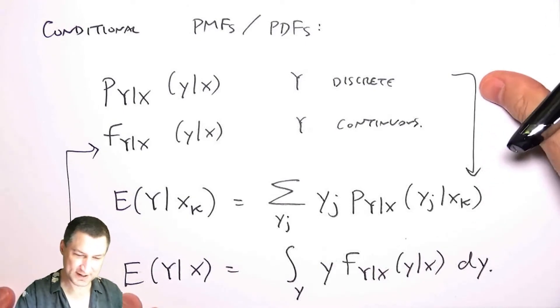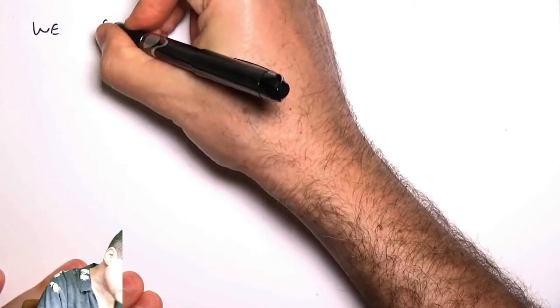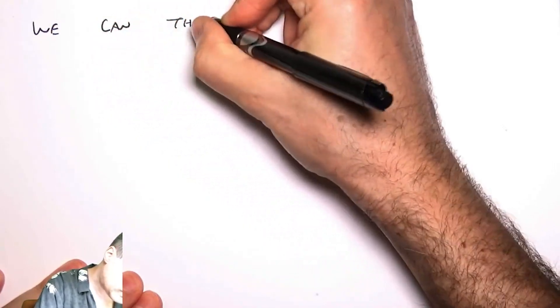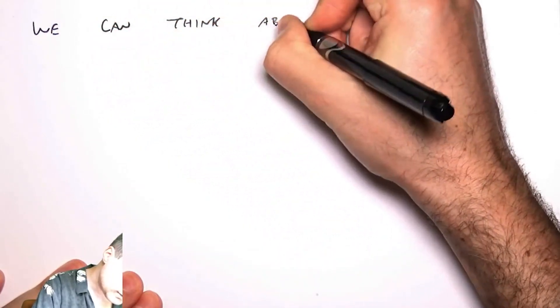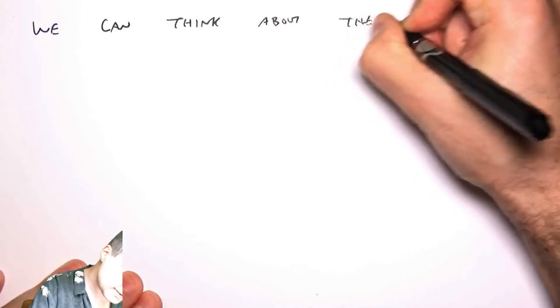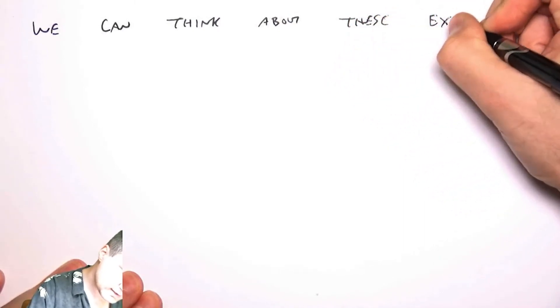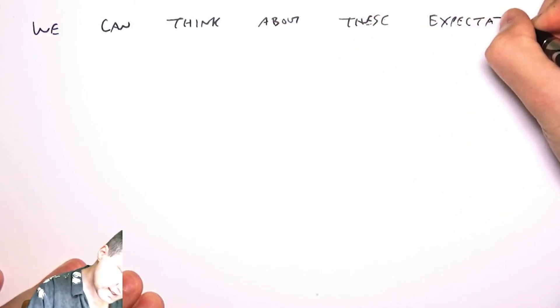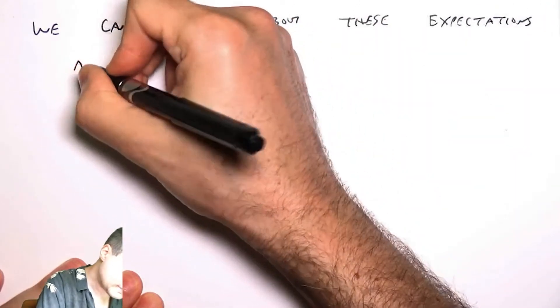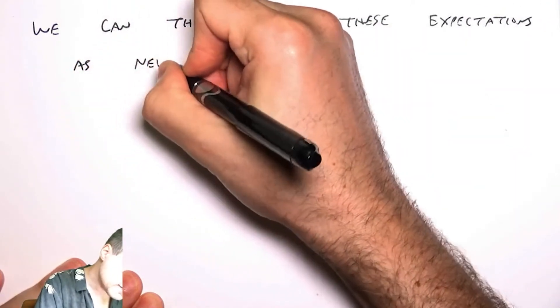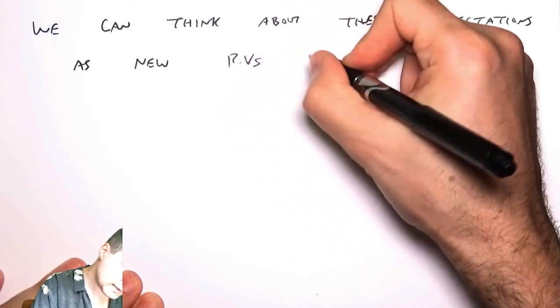So in a way, we can think about these numbers as a new random variable that depends on x. This is a little bit mind-bending because I've got a couple layers, but the idea is that we can think about these expectations as a new random variable that depends on x.